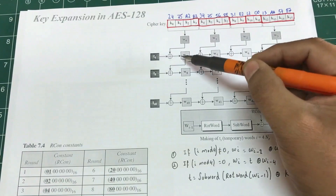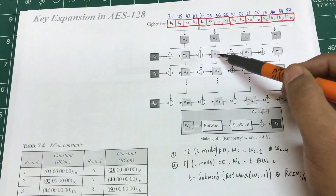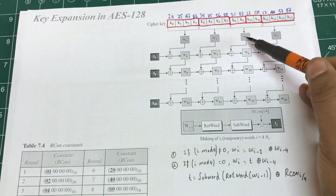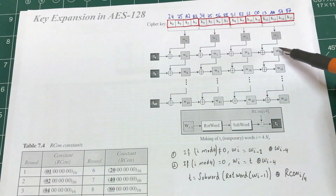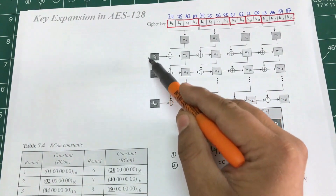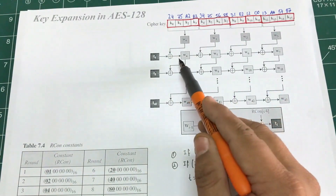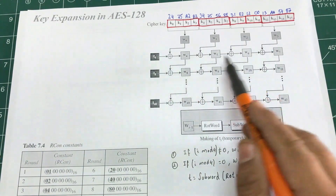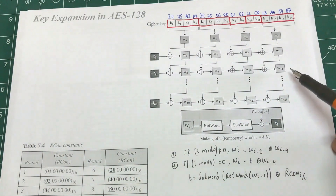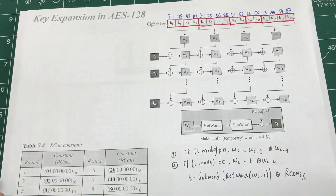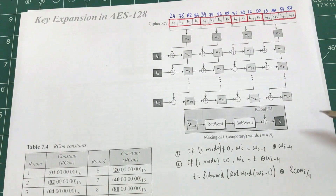Those two values are XOR'd to form a new word W4. W4 is then XOR'd with W1 to form W5. W2 is XOR'd with W5 to form W6, and W3 is XOR'd with W6 to form W7. Not the T values themselves, but W4, W5, W6, W7 — these four words together become the round key. This pattern continues for round two, round three, and so on.